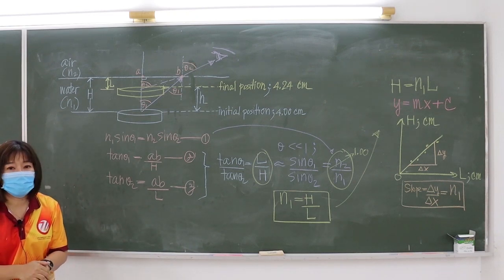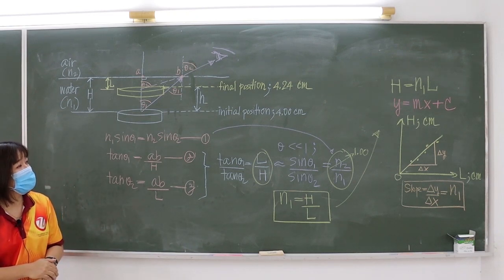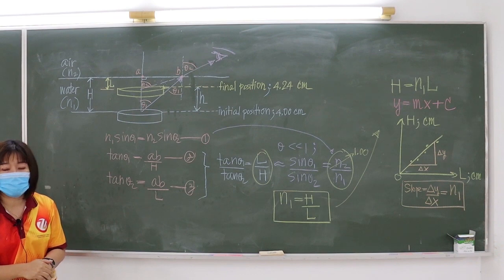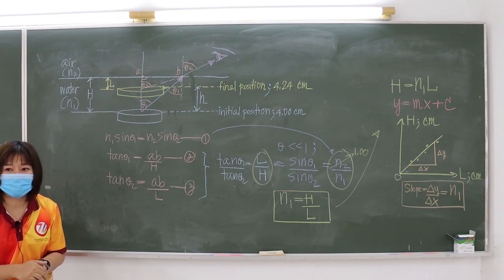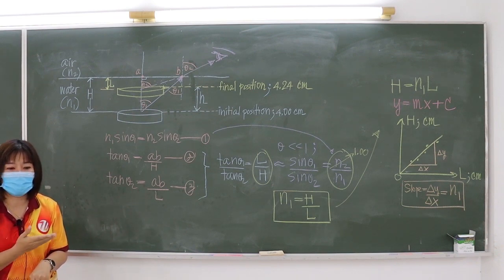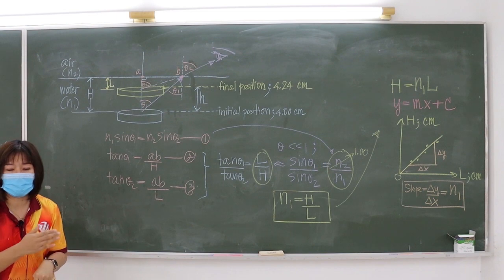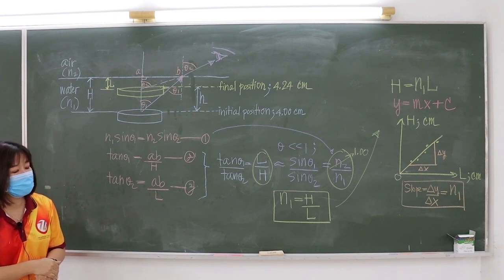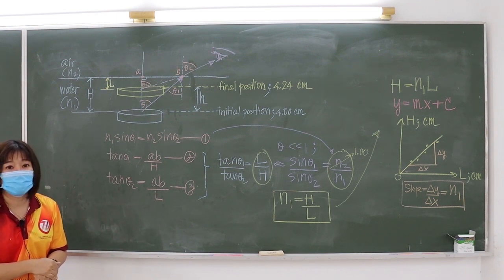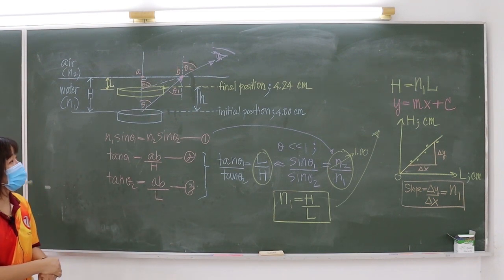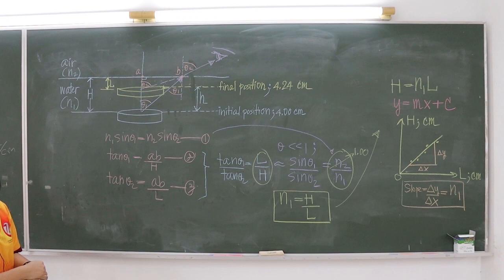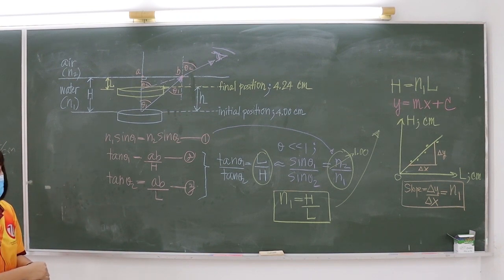The objective of this experiment is to understand real and apparent depth method, and to determine the refractive index of water for part 1 and the refractive index of a transparent sheet for part 2.